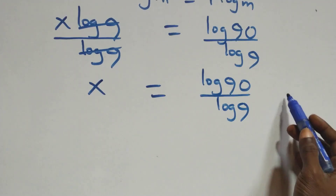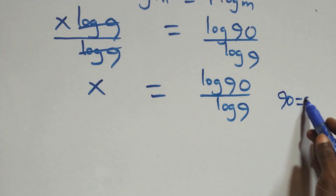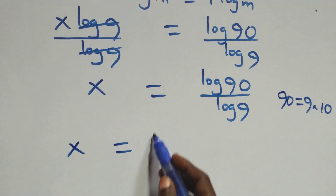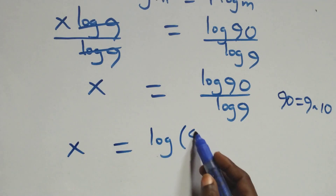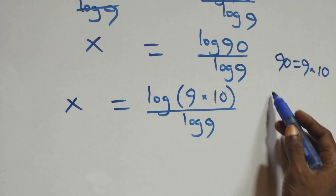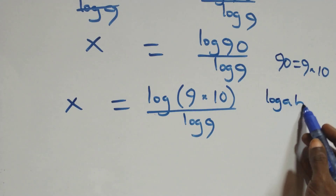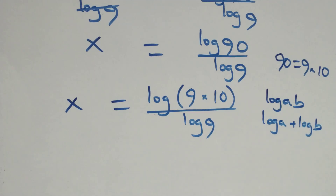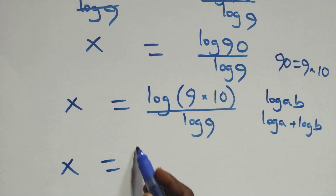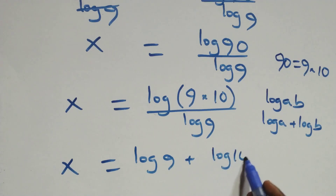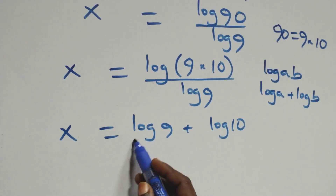Then from here, we write 90 as 9 times 10. What we have becomes x equals to log of 9 times 10, all over log 9. We apply the law of logarithm: log a times b is the same as log a plus log b. So we have x equals to log 9 plus log 10, over log 9.